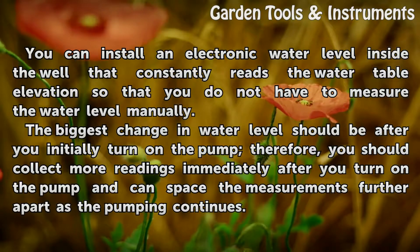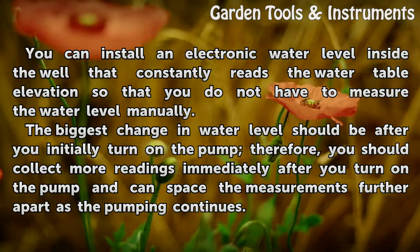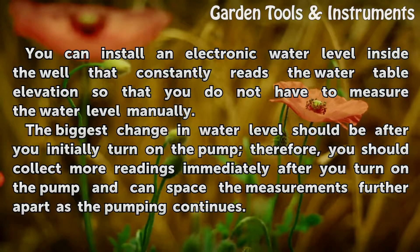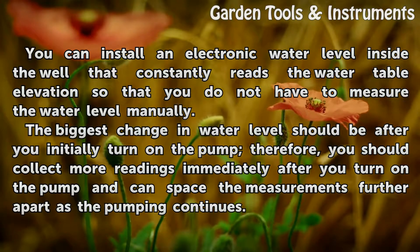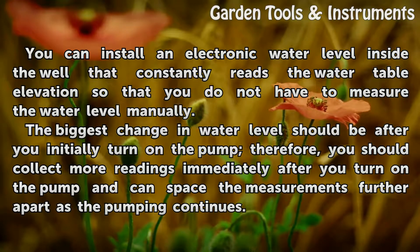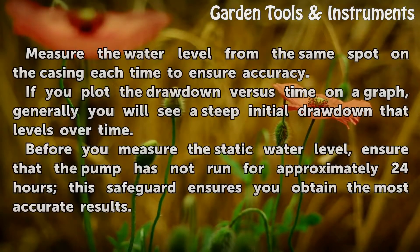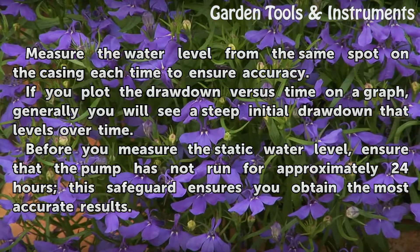You can install an electronic water level inside the well that constantly reads the water table elevation so that you do not have to measure the water level manually. The biggest change in water level should be after you initially turn on the pump; therefore, you should collect more readings immediately after you turn on the pump and can space the measurements further apart as pumping continues. Measure the water level from the same spot on the casing each time to ensure accuracy.